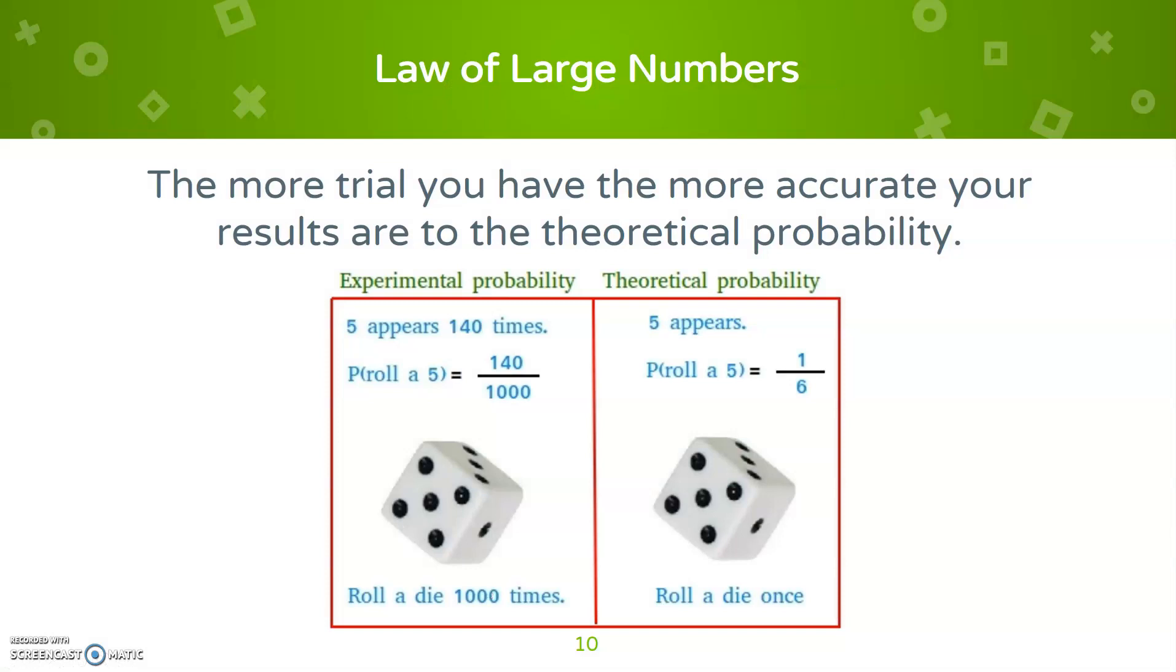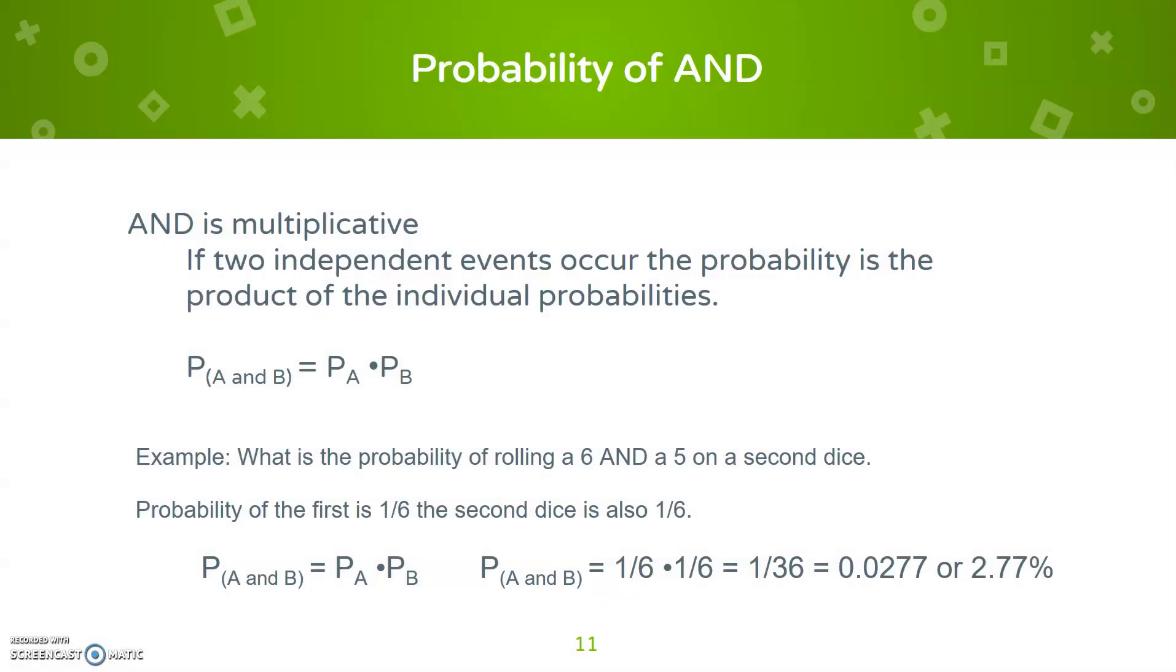The more trials you have, the more accurate your results are. So the more you do it, the better your experiment will get to matching your theoretical. A five appears 140 times out of 1,000 is much better than saying I rolled one dice and it came up as a five. You want to have more numbers, thousands of statistical data points.